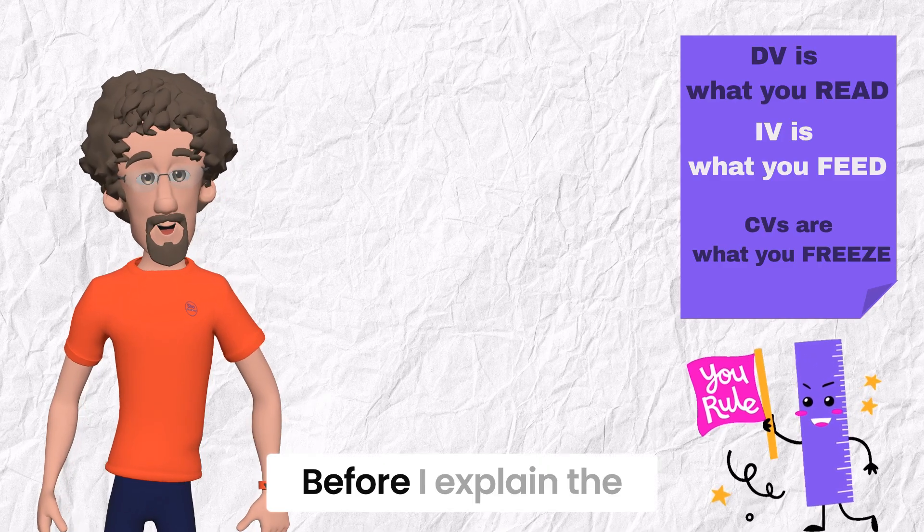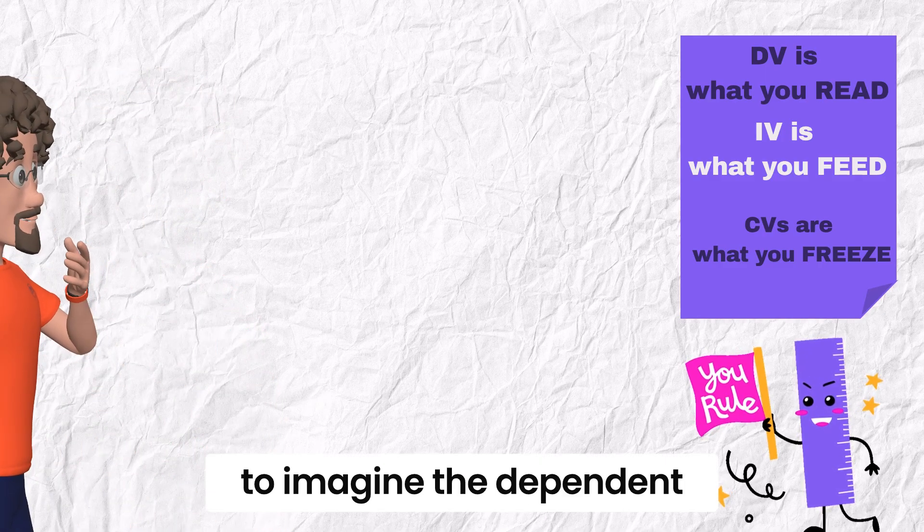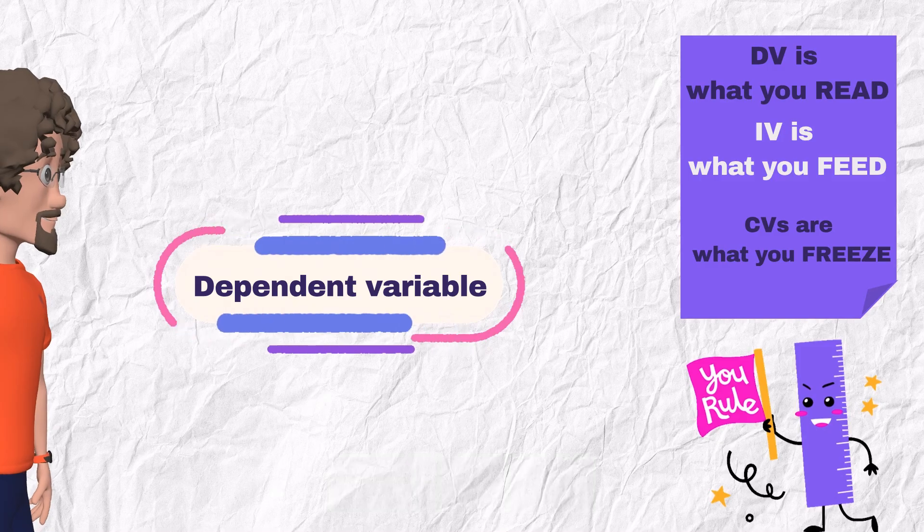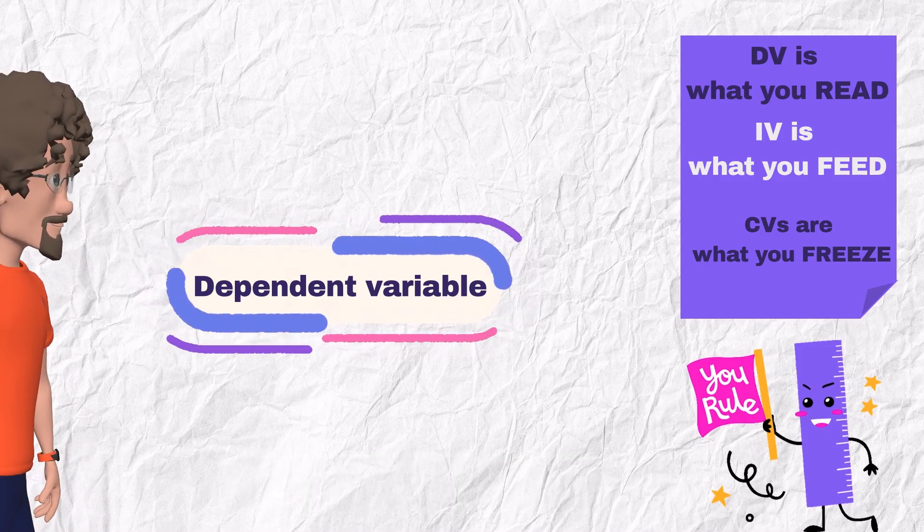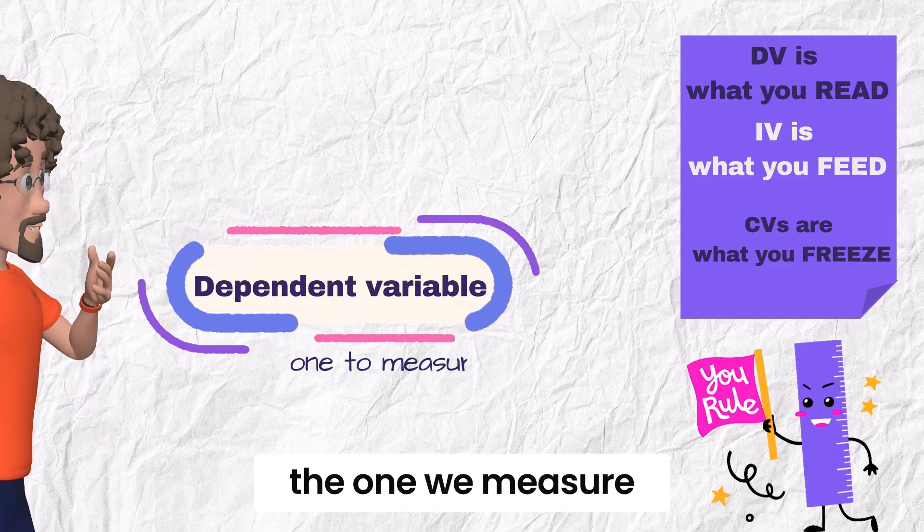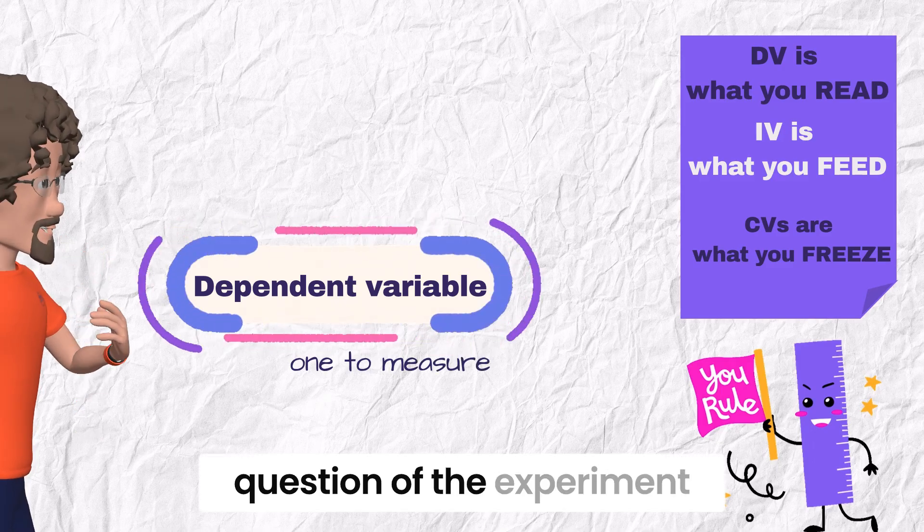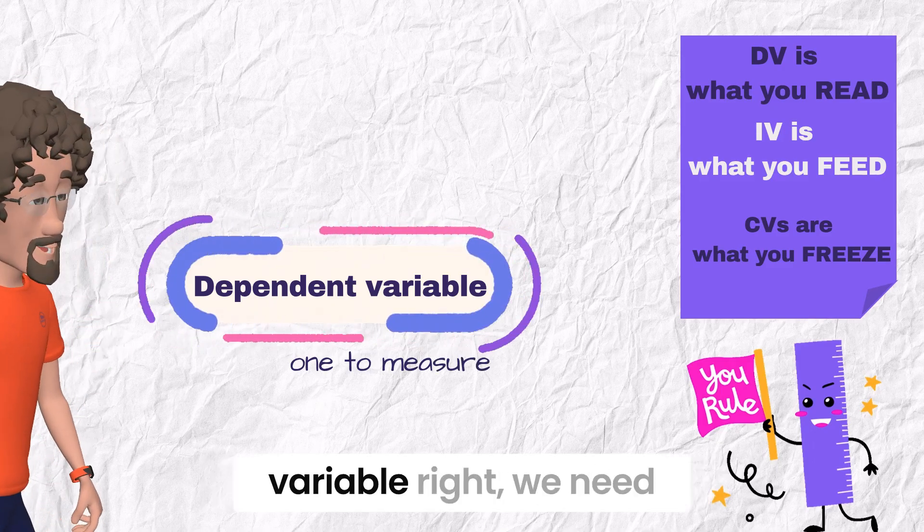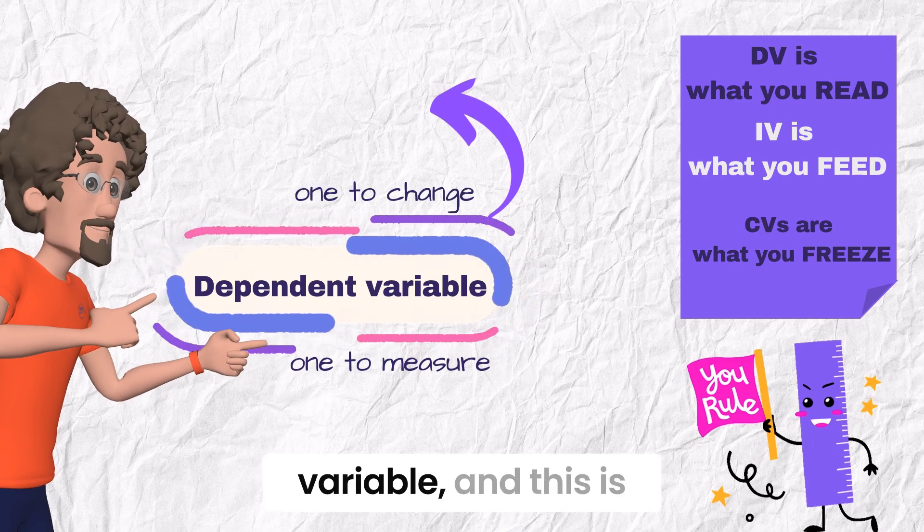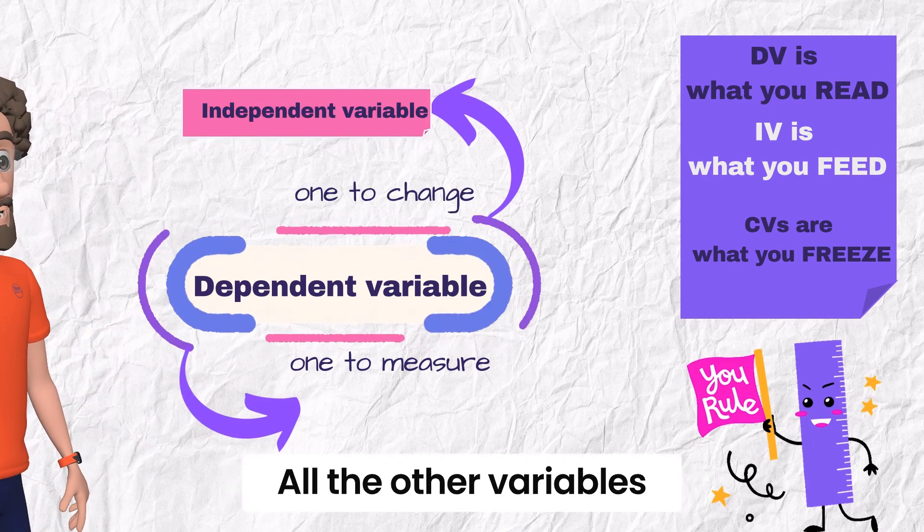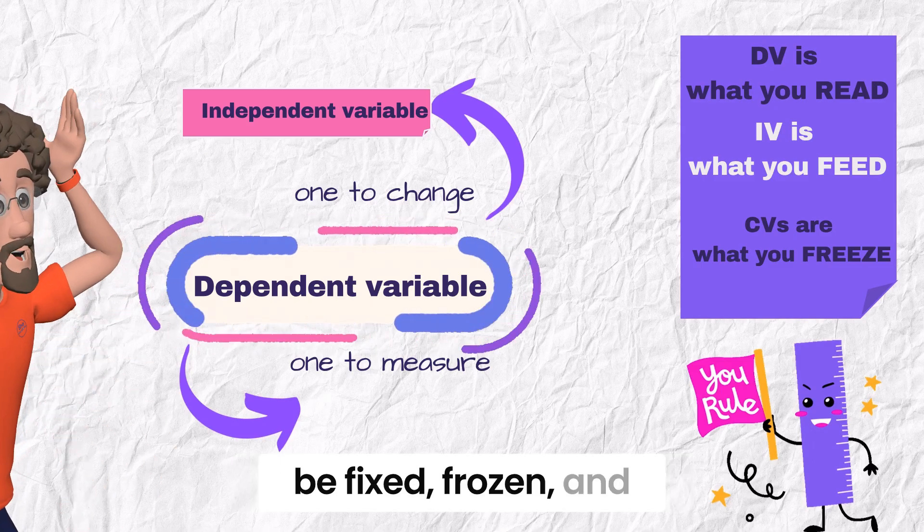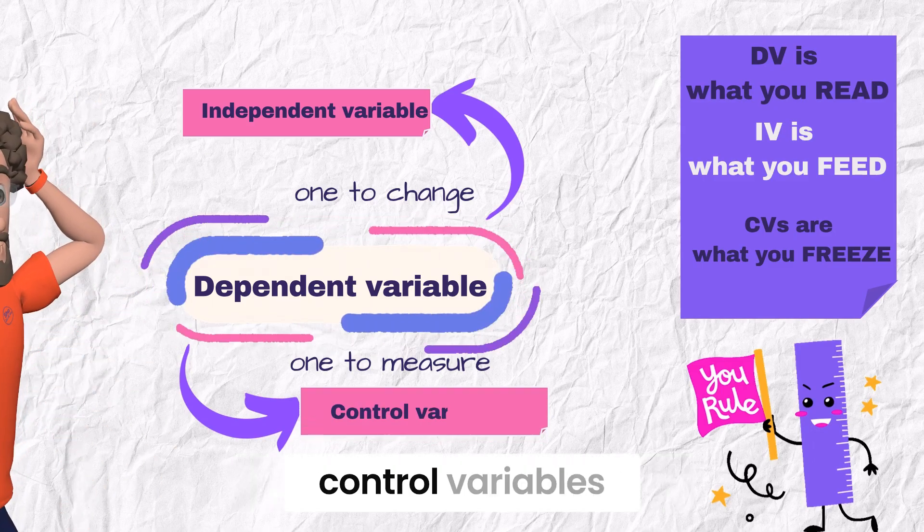Before I explain the rule, imagine the dependent variable as the focus of attention. It's the corner everything else in the experiment moves around. This dependent variable is the one we measure to answer the main question. But to measure this variable right, we need to change only one variable, the independent variable. All the other variables must be fixed, frozen, and these are called the control variables.